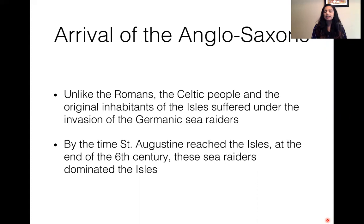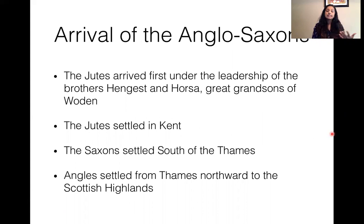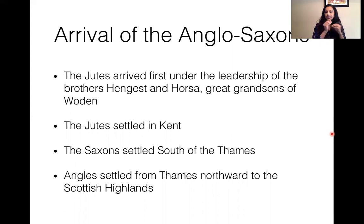In the 6th century, St. Augustine reached the islands, and by then the sea raiders had dominated the islands. The Jutes arrived under the leadership of the brothers Hengist and Horsa, great-grandsons of Woden. The Jutes settled in Kent, the Saxons settled south of the Thames River, and the Angles settled from Thames northward to the Scottish islands.